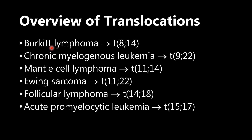We're going to cover Burkitt lymphoma, which is a translocation between chromosomes 8 and 14. Chronic myelogenous leukemia, CML, is chromosomes 9 and 22. Mantle cell lymphoma is chromosomes 11 and 14. Ewing sarcoma is chromosomes 11 and 22. Follicular lymphoma is chromosomes 14 and 18. And finally, acute promyelocytic leukemia is chromosomes 15 and 17.